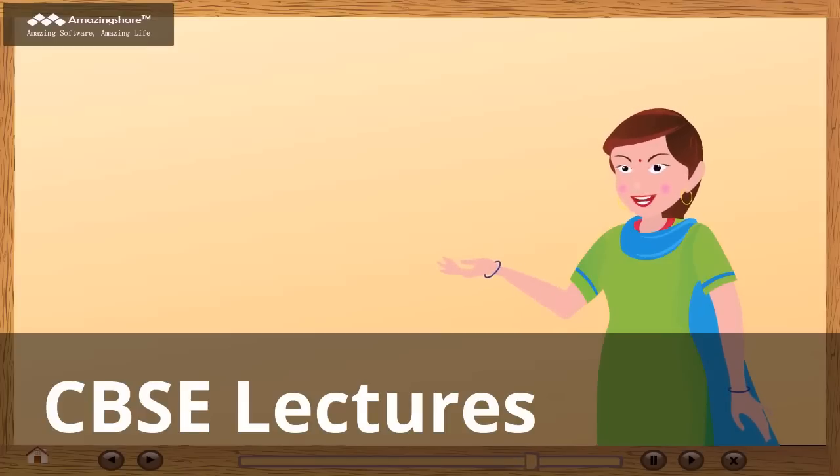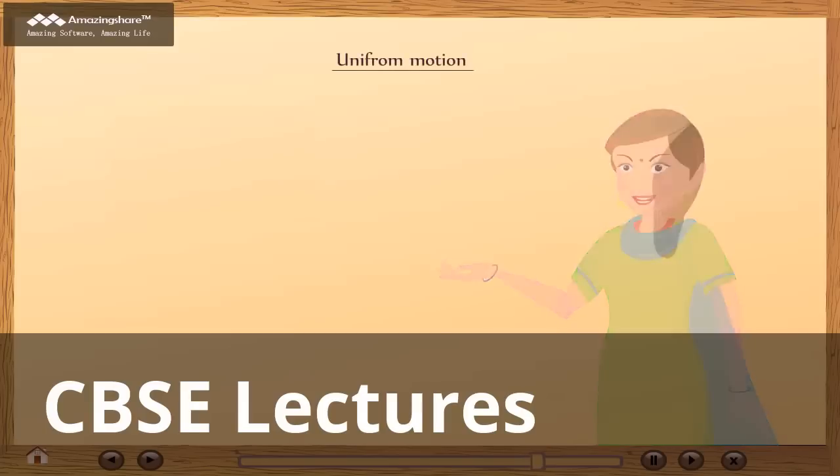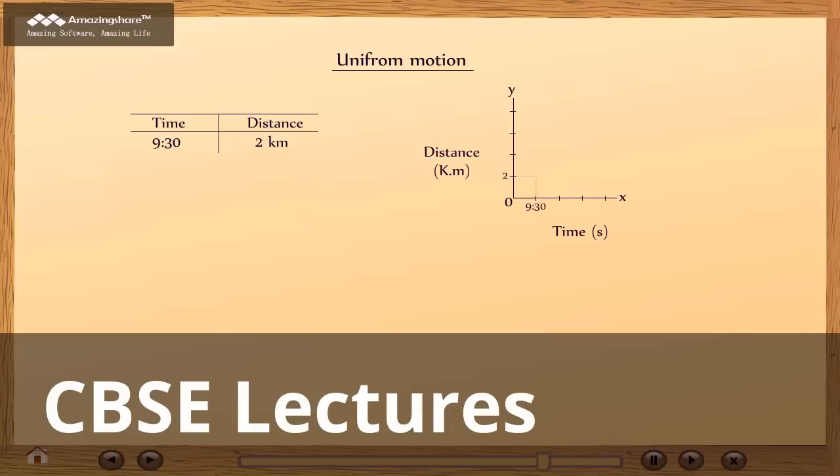First we discuss about uniform motion. Let us take an object. It is moving at 9:30, it covers the distance of 2 km. At 9:45, it covers the distance of 4 km.